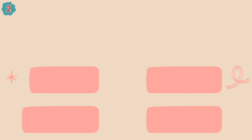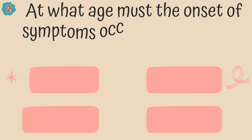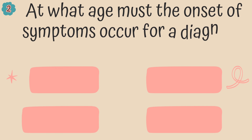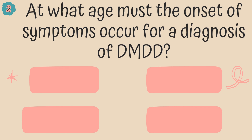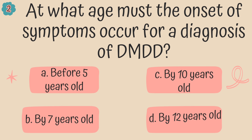Question 2. At what age must the onset of symptoms occur for a diagnosis of DMDD? Is it A. Before 5 years of age, B. By 7 years old, C. By 10 years old, or D. By 12 years old?